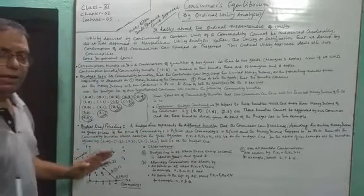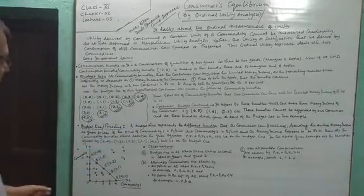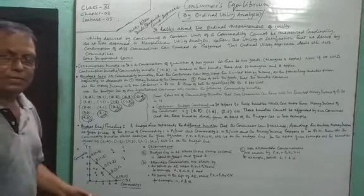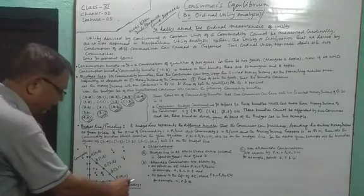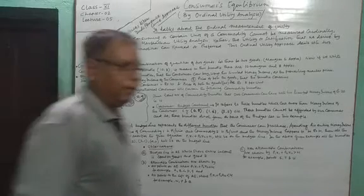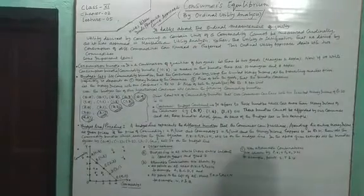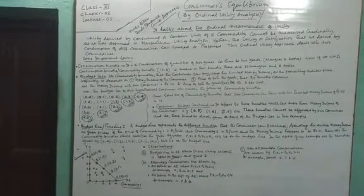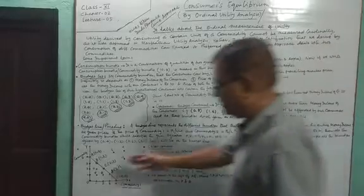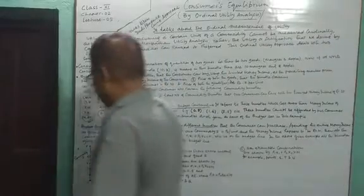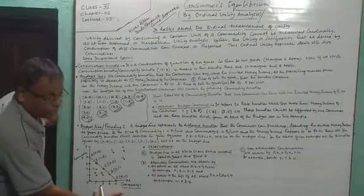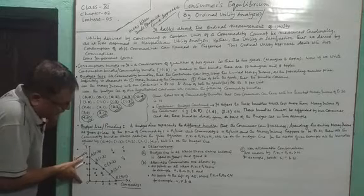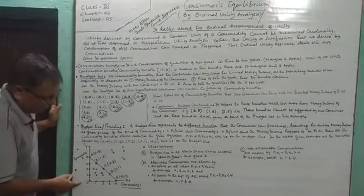Now I have given a graphical representation of the budget line. Along the x-axis we plot commodity 1 (mangoes), and along the y-axis we plot commodity 2 (apples).